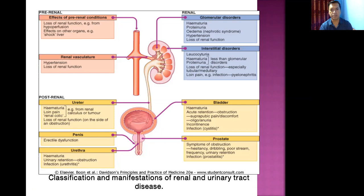Manifestations of glomerular disorders include hematuria (blood in urine), proteinuria (protein in urine), and edema — swelling due to fluid collection in the interstitial space, more commonly seen in nephrotic syndrome than nephritic syndrome. Hypertension and loss of renal function manifested by oliguria or rise in BUN and serum creatinine are also present.